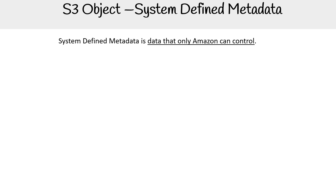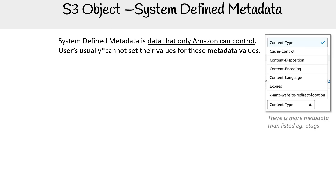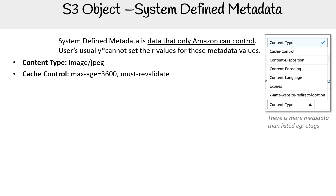System-defined metadata is data that only Amazon can control, but that's not technically 100% true, because there are some values you can set. The first being content type, but most of these you do not set — they're set internally by AWS. Let's take a look at the system-defined metadata: we have content type, which tells you the type of file it is.